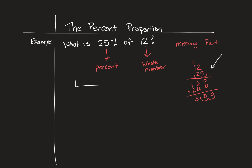Another way we can solve this is to think of 12 as a whole. If I split this in half, I have 6 here and 6 here — that's 50% and 50%. If I cut 50% in half again, that means each piece is 25%. So 25 + 25 + 25 + 25 = 100%. If I divide 6 by 2, each of those boxes has to be 3, which is 25%. So 25% of 12 is 3.